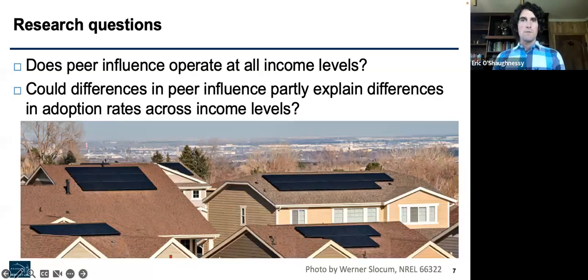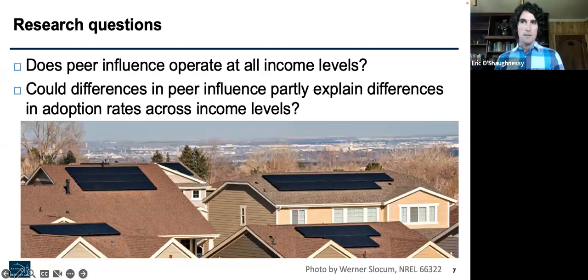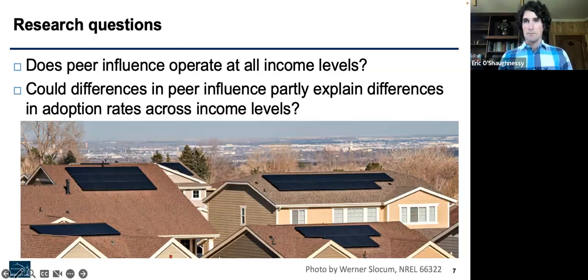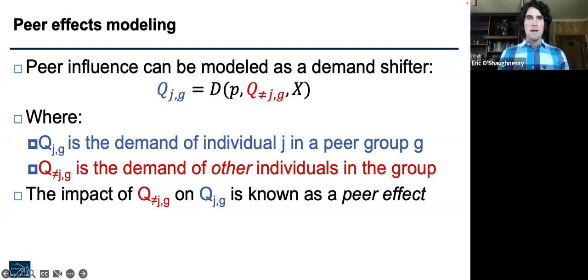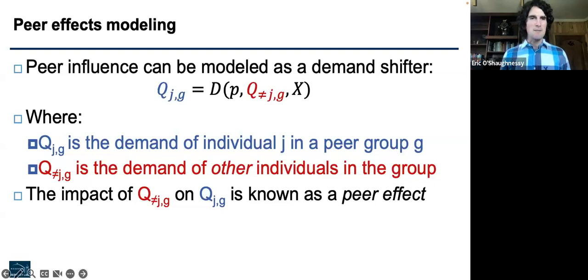In this paper, we look at two specific research questions: Does peer influence operate at all income levels? Past research looked at income differences across geographic units such as zip codes, but here we look at whether influence operates differently at different income levels at the household level. And could differences in peer influence partly explain the differences in adoption rates I described? I'm going to hover around methods and modeling for a couple of slides, partly because with peer influence it just takes some convincing that we can actually measure it — but I'll try to keep it as simple as possible.